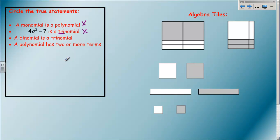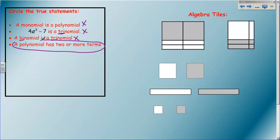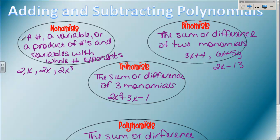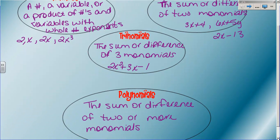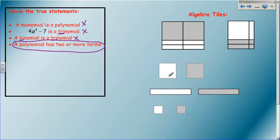The next statement: a binomial is a trinomial. To be a binomial you have to have two terms; to be a trinomial you have to have three. It's kind of like saying a square is a triangle - no, because you don't have enough sides. So this is not true either. And then the last one: a polynomial has two or more terms. This is the only true statement because that was the definition of polynomial - it has two or more monomials.